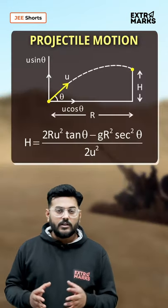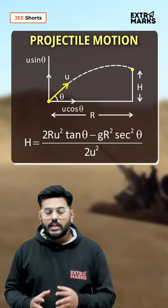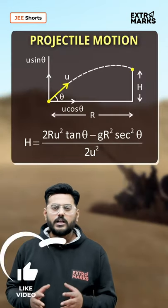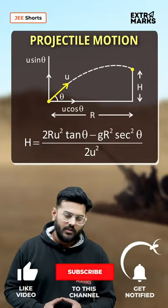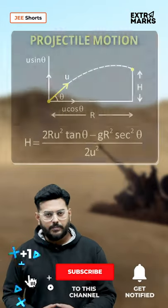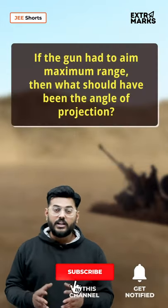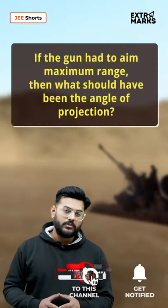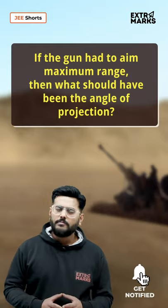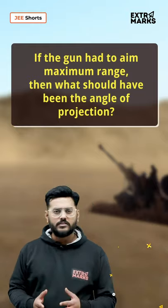Basically, this gun was following the principles of projectile motion. So, my question to you is: if the gun had to aim for the maximum range, then what should have been the angle of projection?